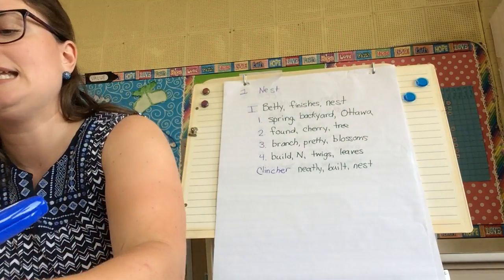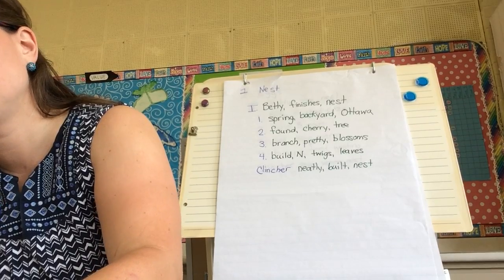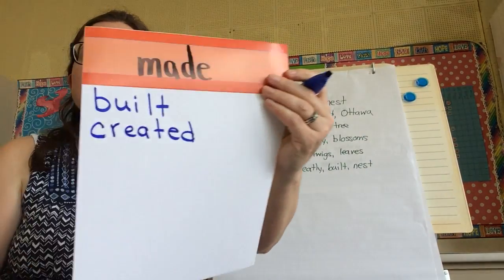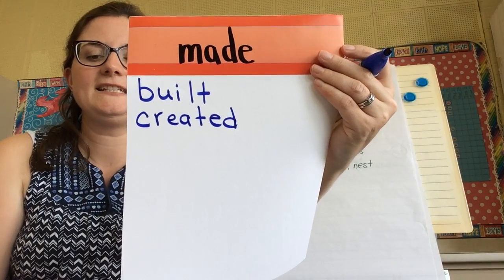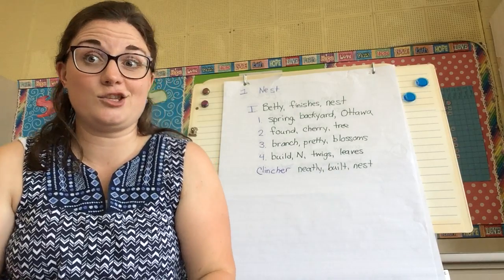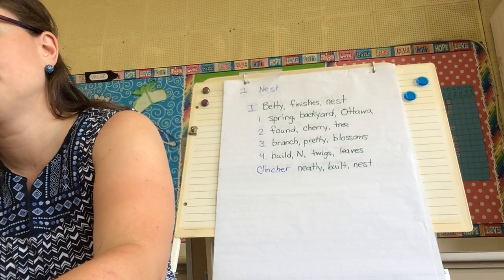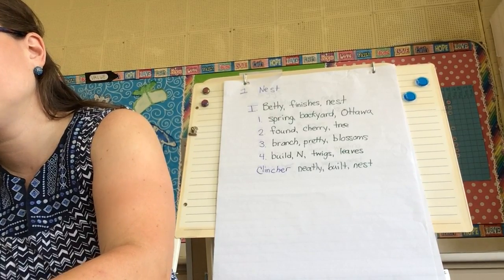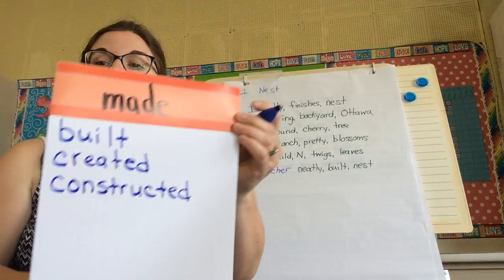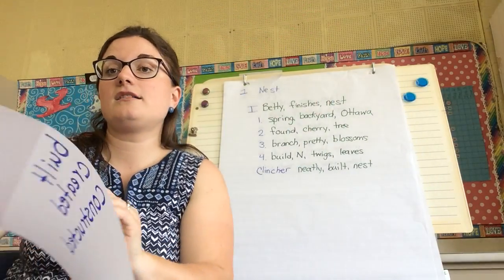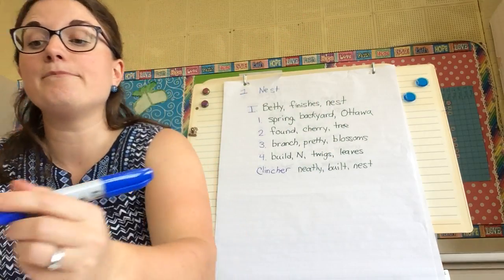You could say created a nest. Created a nest. You could say constructed a nest. So Betty constructed a nest. Another word for made is I could say assembled.